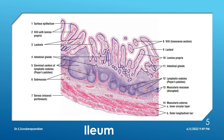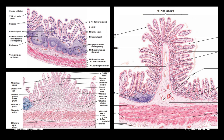So we have seen duodenum, jejunum, and ileum. The next part shows how to differentiate all three. First, see for all four layers: mucosa, submucosa, muscularis externa, and serosa. Then see for surface projections — if villi are present, that means it is small intestine. Next, concentrate on the submucosa: if there are numerous glands — Brunner's glands — that is the slide of duodenum.